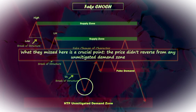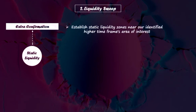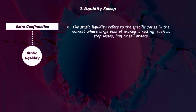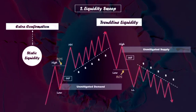Now let's move into the next confluence criteria: liquidity sweep. To obtain additional confirmation in identifying high quality change of character patterns indicating an upcoming market structure shift, we should wait for the price to establish static liquidity zones near our identified higher time frame area of interest. Static liquidity refers to specific zones in the market where a large pool of money is resting, such as stop losses and buy or sell orders. The most important and practical types are equal lows, equal highs, and dynamic trend lines, each falling into distinct categories like double bottom, double top, triple bottom, triple top, and bearish or bullish dynamic trend lines.